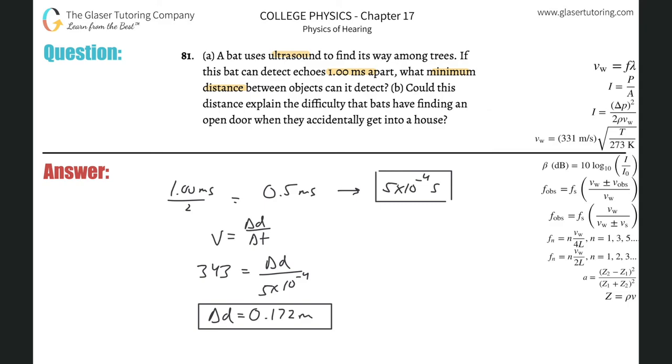And then letter B, could this distance explain the difficulty that bats have finding an open door when they accidentally get into a house? Sure. I mean, a half a meter is a decent amount of size.